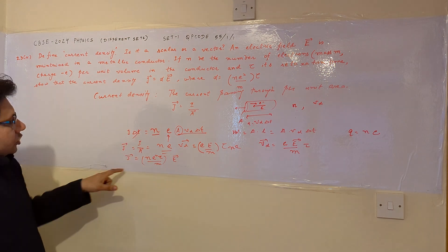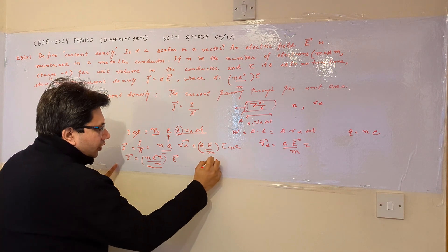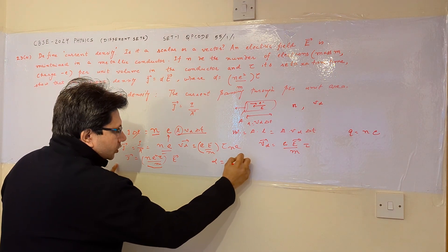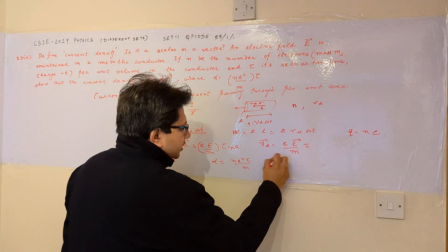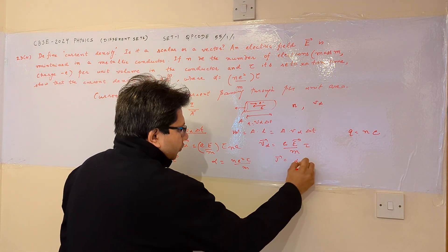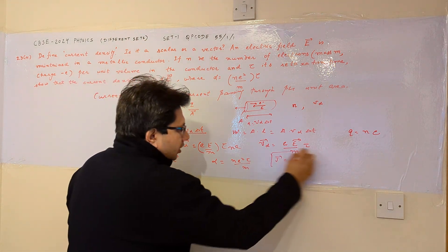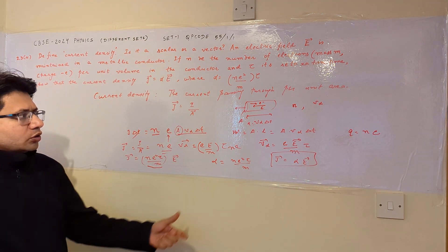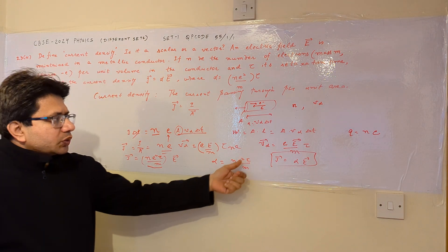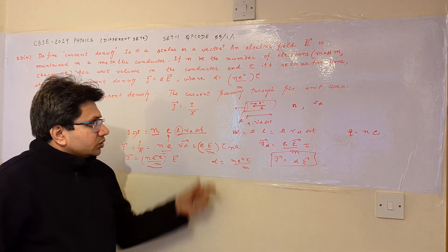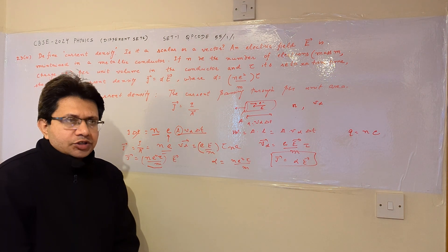So the final expression is j equals (ne²τ/m)·E. If we call ne²τ/m as α, then α equals ne²τ/m, and j equals αE. This is an alternate form of Ohm's law. This completes the overall derivation. Hope you understand the solution and derivation — thank you.